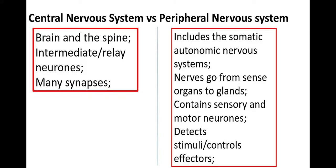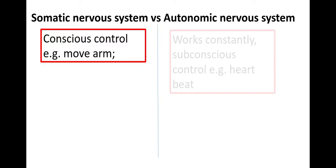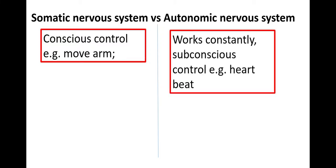The peripheral nervous system is split into the somatic and the autonomic nervous system. The somatic nervous system is your conscious control — for example, where you think about moving your arm or your leg, or think about smiling. The autonomic nervous system is working constantly; it's your subconscious control, such as your heartbeat.